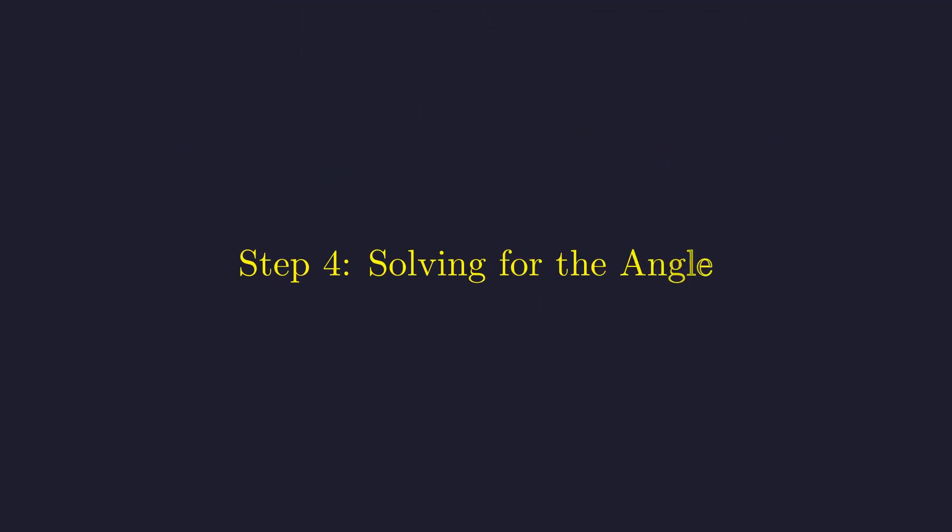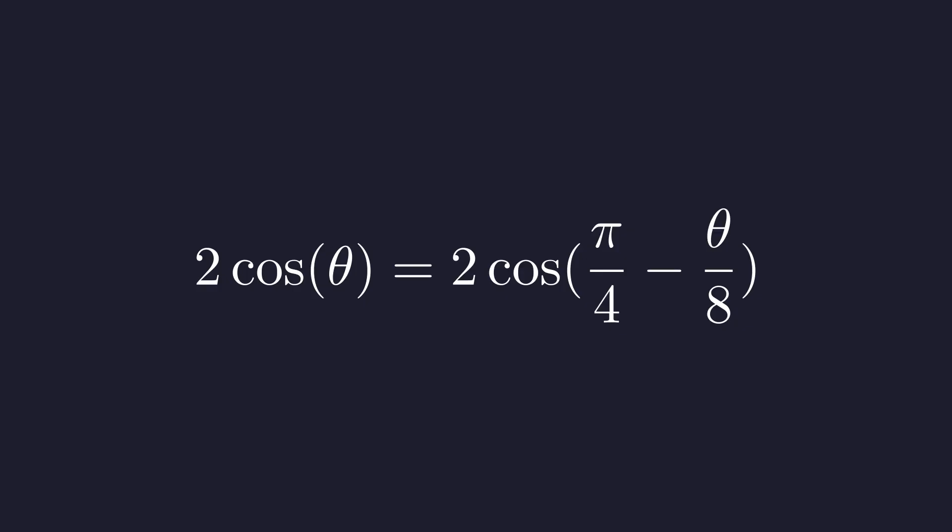Now we have two expressions for x. Equating them will allow us to solve for the angle θ. On one hand, x is 2 cosine θ by definition. On the other, it's 2 cosine of π over 4 minus θ over 8 by derivation. Since both angles are in the first quadrant where cosine is one-to-one, we can equate the arguments directly.